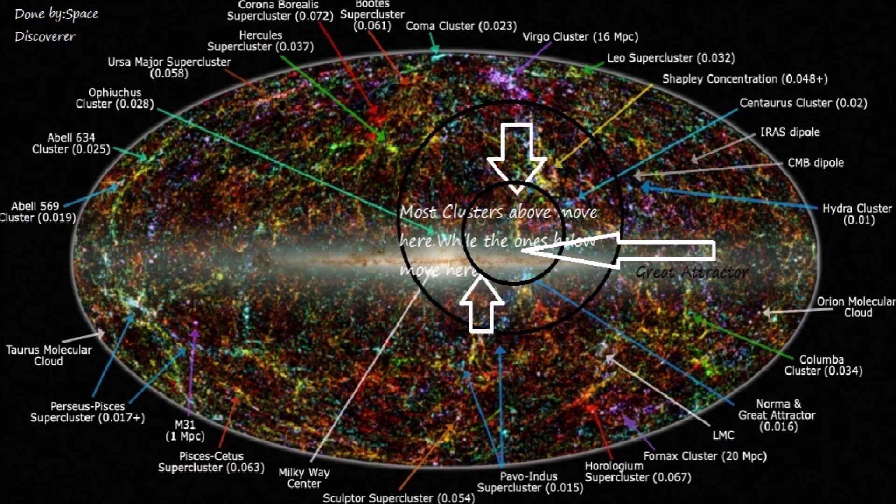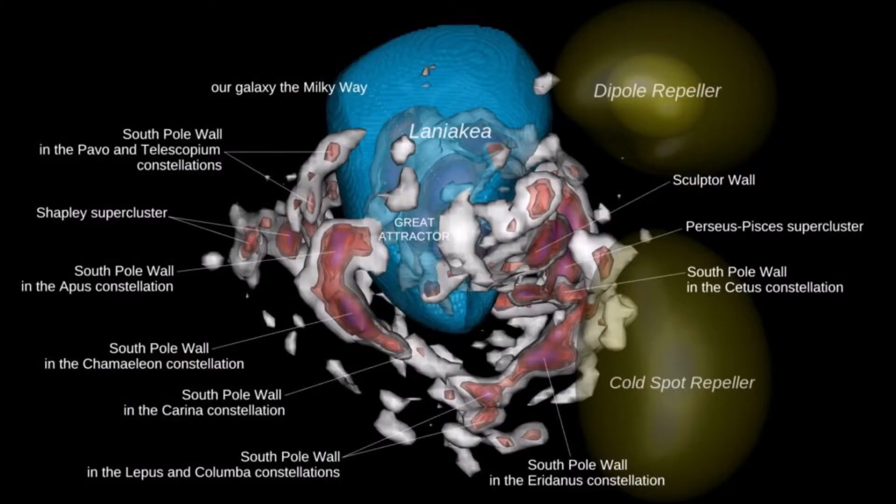The Great Attractor is a point in intergalactic space that is gravitationally affecting a very large area around it. Many nearby galaxies seem to be drawn towards it, and it seems to be the center of the Laniakea supercluster,